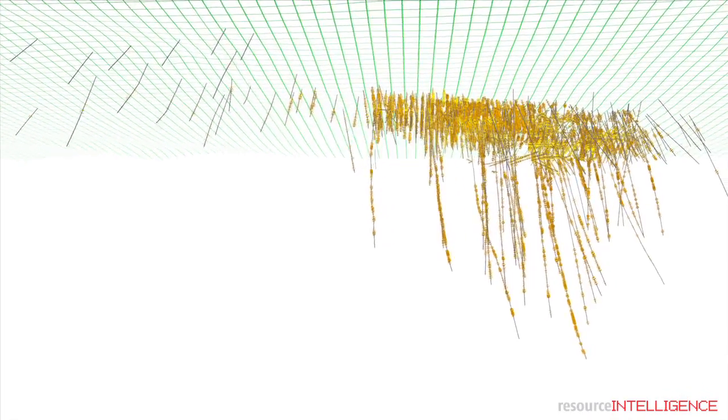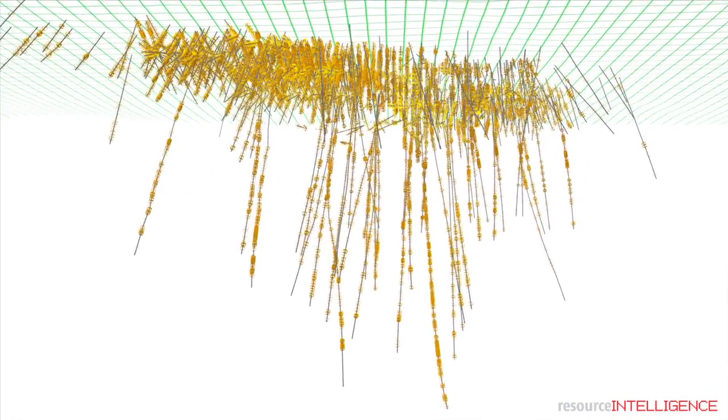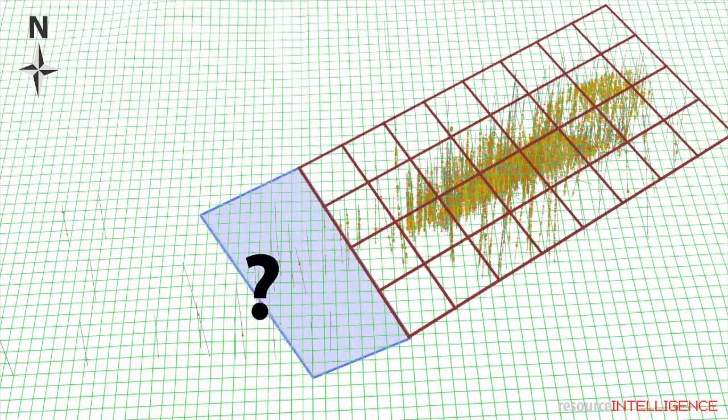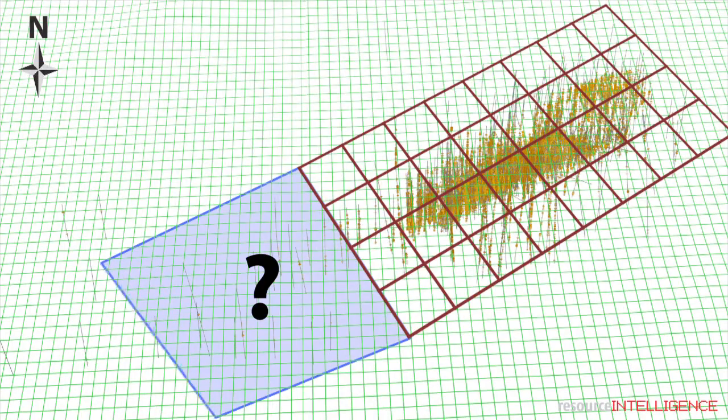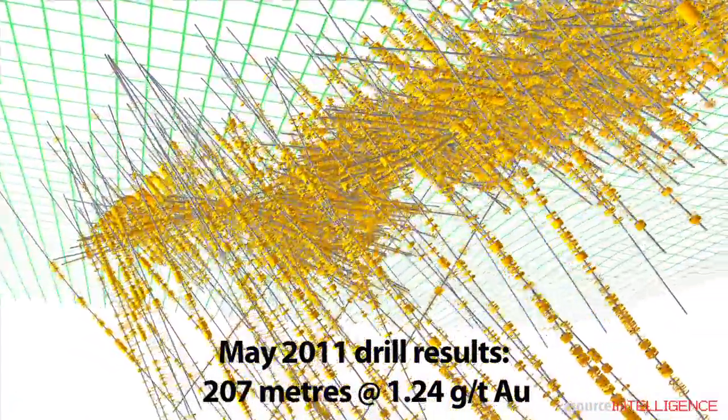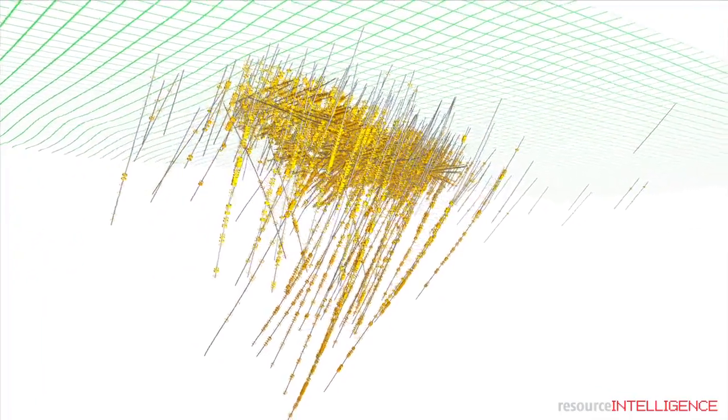Ongoing infill and exploration drilling at Magino continues to demonstrate the potential for growth. May 2011 results included an astounding 207.4 meters grading 1.24 grams per ton gold. These and other similar results led the company to increase the ongoing drilling program to a total of 45,000 meters.